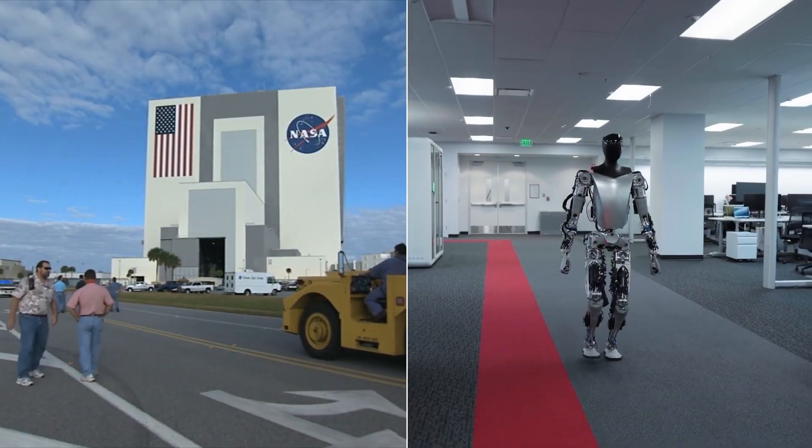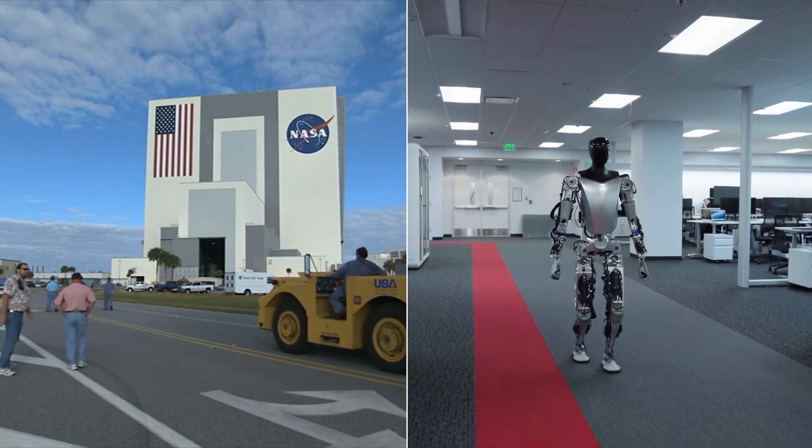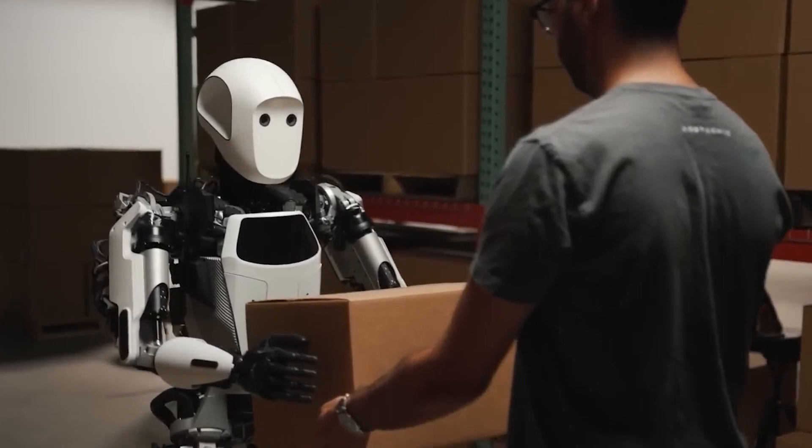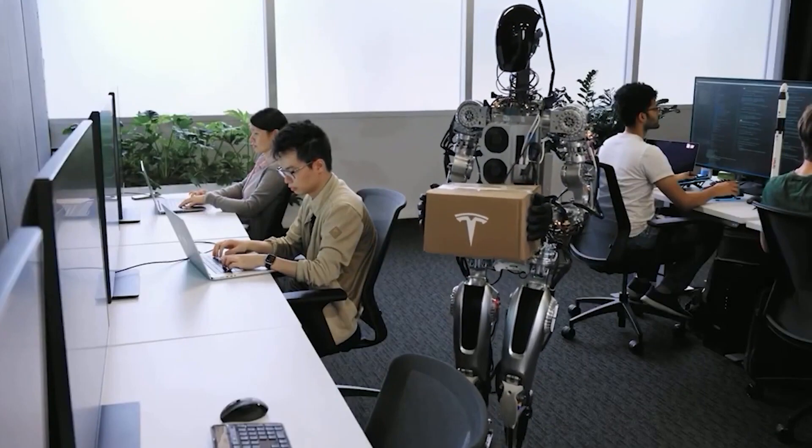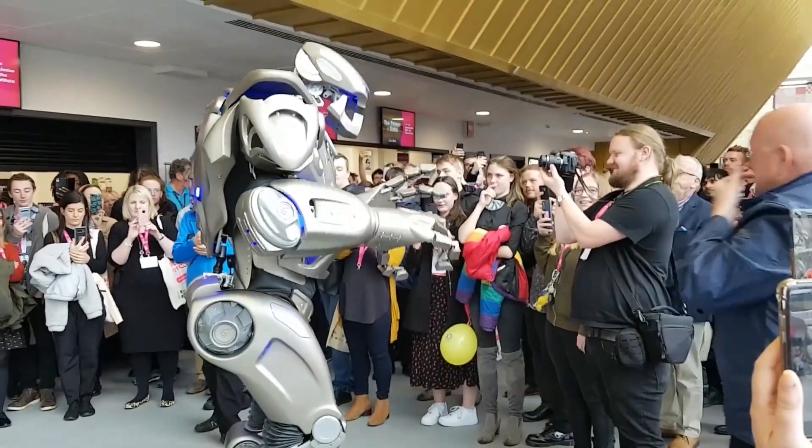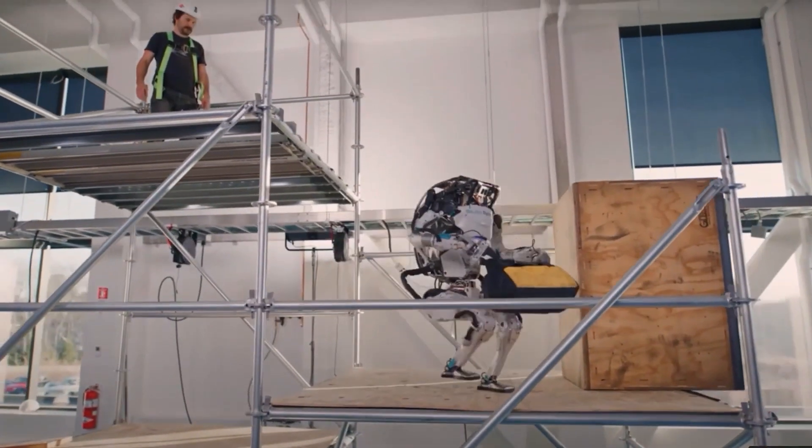Well NASA says that humanoid robots have some advantages over other types of robots. They can use the same tools and equipment that humans use. So they don't need special adaptations. They can also work alongside humans in a more natural and efficient way. So they can enhance human capabilities.